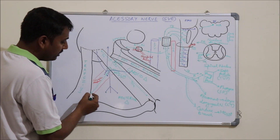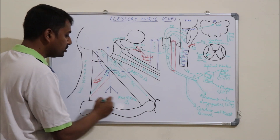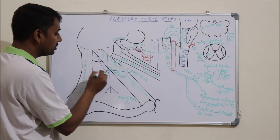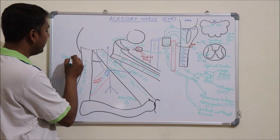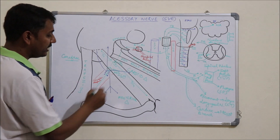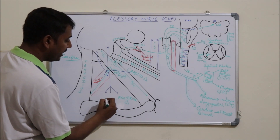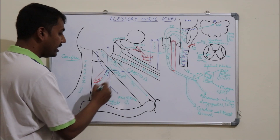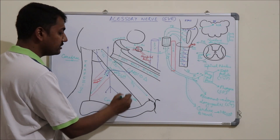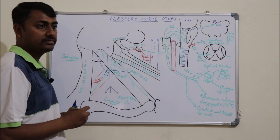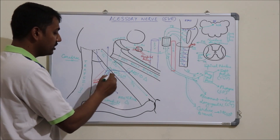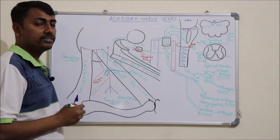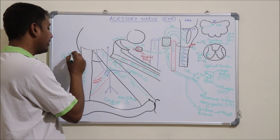The downward course of the spinal accessory nerve divides the posterior triangle into two zones. The area above the nerve is a care-free area where no important structures lie. The area below the nerve is a careful area, because it contains the brachial plexus, subclavian artery, subclavian veins, and other blood vessels.